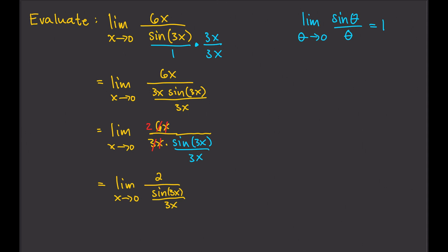Then, by the quotient rule or the division rule of finding limits, then we can try to separate the limits. So, this one just equals the limit of 2 as x approaches 0 divided by the limit of sine 3x over 3x as x approaches 0.